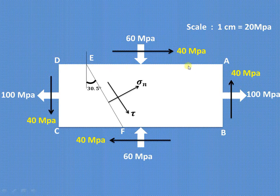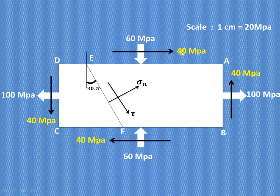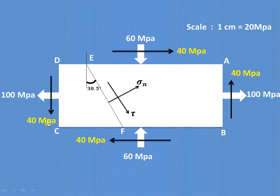If we consider the two parallel planes, the pair of complementary shear stresses there are producing a clockwise moment, and therefore they are positive. So on plane AB, the normal tensile stress is positive, while the complementary shear stresses are negative because they produce an anti-clockwise moment.